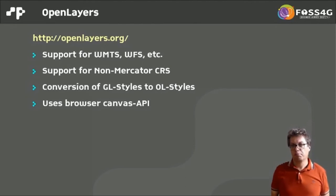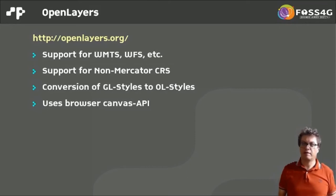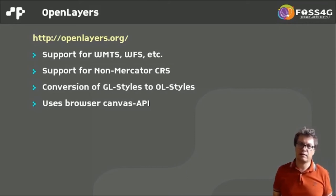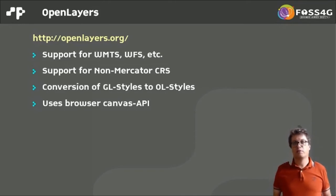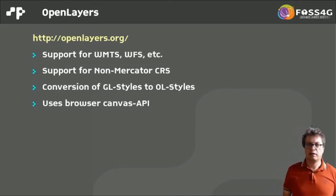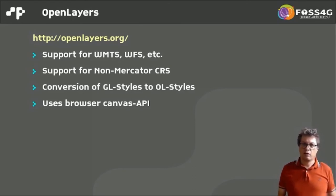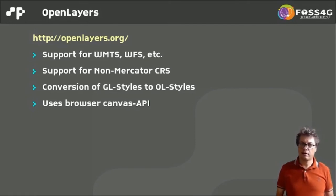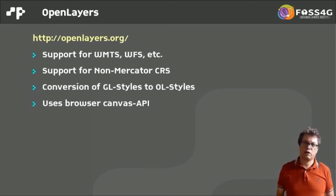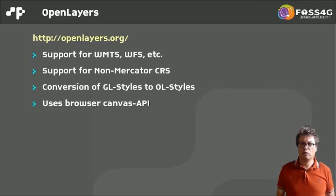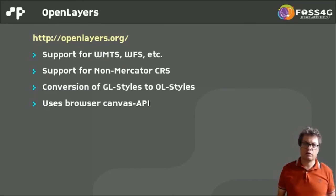The other important viewer is OpenLayers, which has had vector tile support for quite a long time. Its main advantage is that it also supports all common base layers like WMS, WMTS, WFS, and so on, and supports CRS other than Mercator. It has a conversion of GL styles to OpenLayers styles — not identical but with good support. It uses the Canvas API, which helps with older browsers or machines but can be a disadvantage in terms of speed.